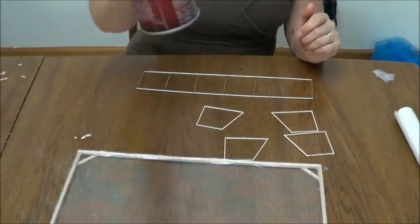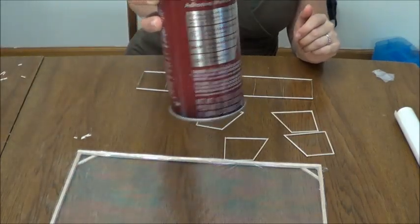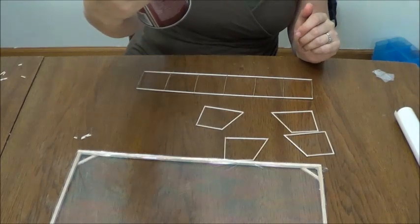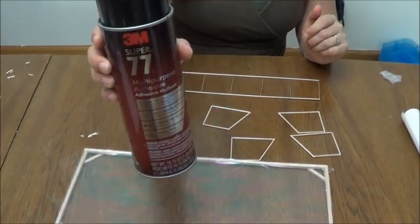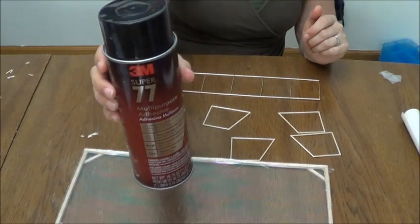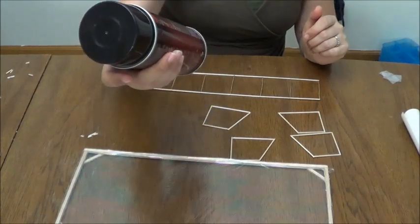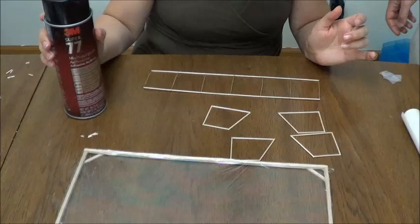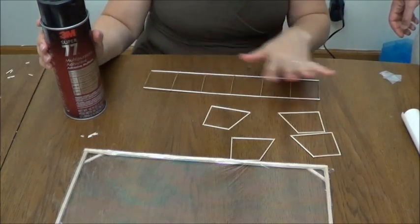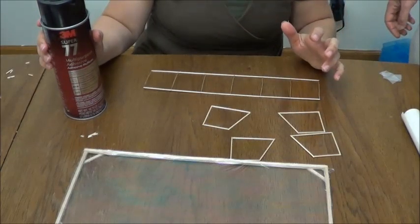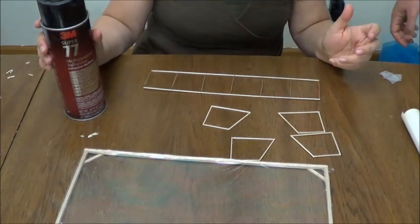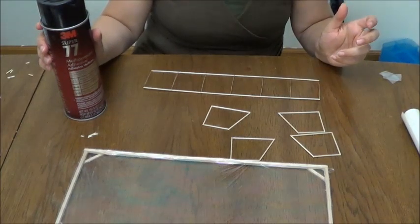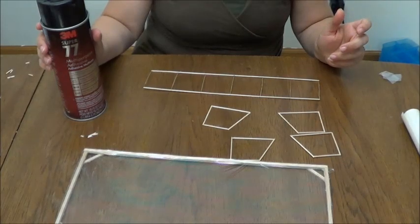This is the spray that we used, the 3M Super 77 spray glue. Now you can see what they are in frame. And you want to mist this enough that it gets covered but you don't want big globs of glue everywhere. We're going to go out on the porch and show you how that's done.